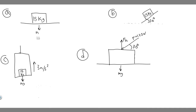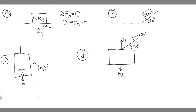We have mg, the force due to gravity, pulling the block down. The normal force, F sub n, is just equal to the force touching it — since the block exerts mg downward on the table, the normal force pushes back upward equally. Taking the sum of the forces in the y-direction and setting it to zero (since the block isn't moving): zero equals F sub n minus mg, so F sub n equals mg.